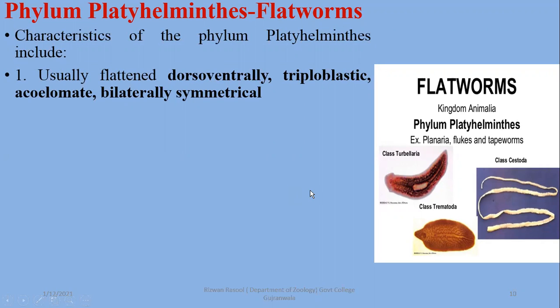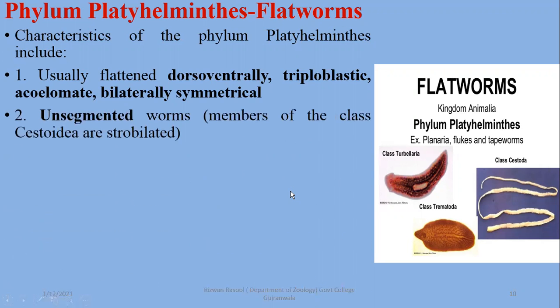Flatworms have flattened bodies and are triploblastic, acoelomate, and bilaterally symmetrical. They are also unsegmented.